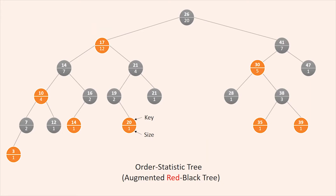The figure shows a data structure that can support fast order statistics operations. An order statistic tree T is simply a red-black tree with additional information stored in each node. Beside the usual red-black tree attributes x.key, x.color, x.p, x.left and x.right, in a node x we have another attribute x.size. This attribute contains the number of internal nodes in the subtree rooted at x, including x itself — that is, the size of the subtree.